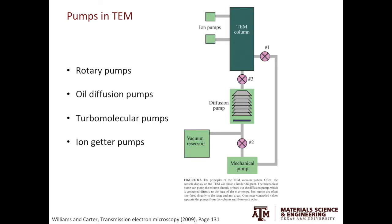To give you a big picture and to put all the pumps together — we start with the mechanical pump or the rotary pump. It will reduce the pressure in the system. Once the vacuum is okay, the diffusion pump will be turned on. When a better vacuum is achieved, the ion getter pumps will kick in to reach an even better vacuum. Let's look at how these pumps work one by one.